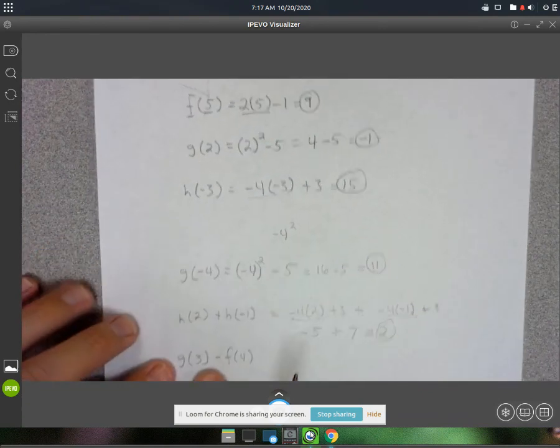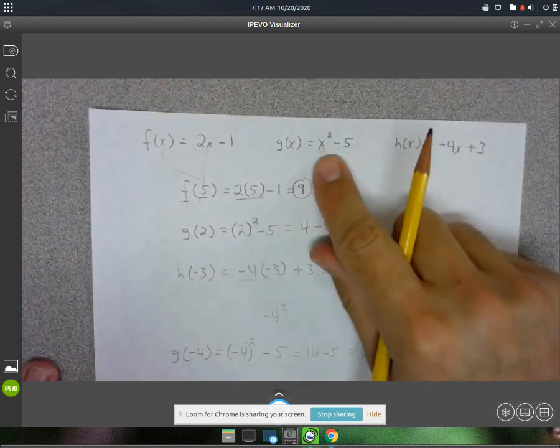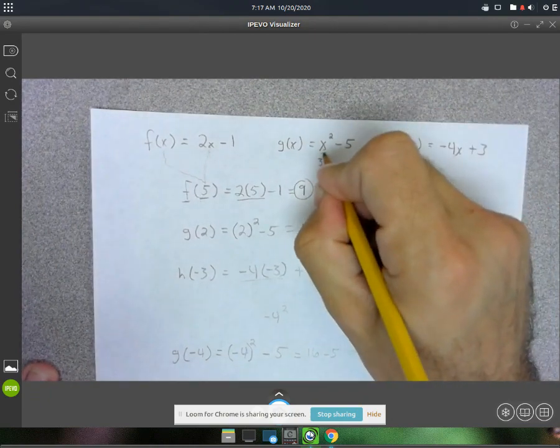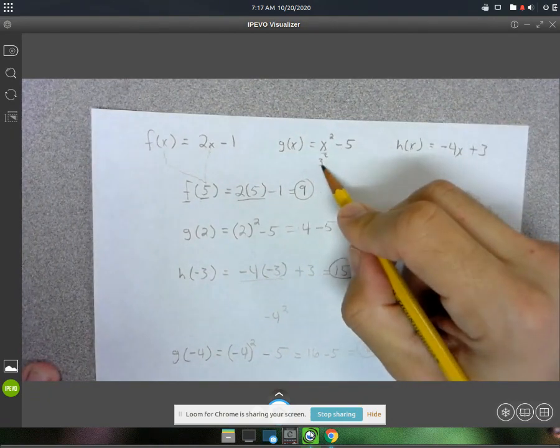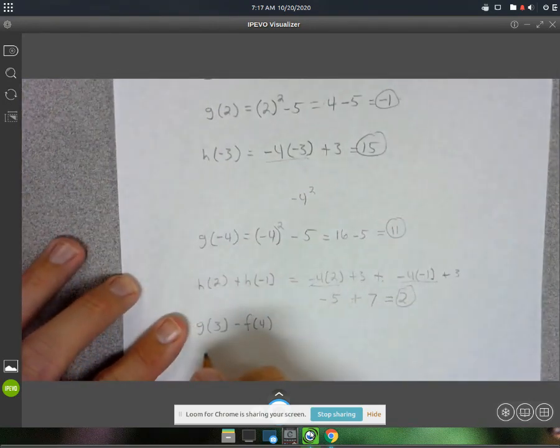Okay. Let's see here, we've got g of 3 minus f of 4. Let's just plug that in. g of 3. Alright, so 3 squared. 3 squared is 9. And then 9 minus 5 is 4. So g of 3 is going to be 4.